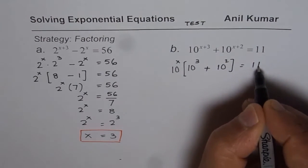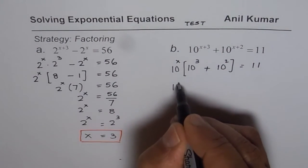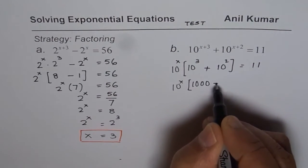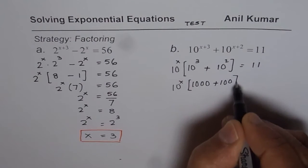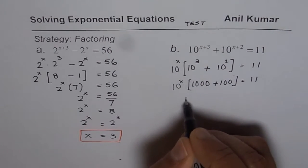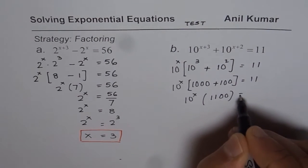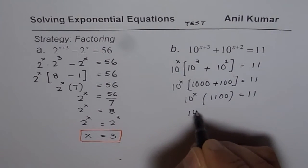That equals to 11, and that gives us 10 to the power of x equals - this is 1000, right? 1000 plus 100 equals 11. 10 to the power of x, 1000 plus 100 means 1100.